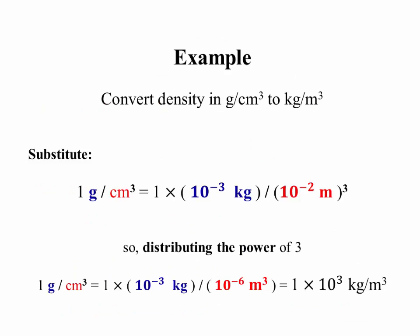Another example. Converting density in grams per cubic centimeter to kilograms per cubic meter. We just substitute. A gram is 10 to the minus 3 kilograms. The centimeter is 10 to the minus 2 meters, but it's cubed. After you distribute the power of 3, you get 10 to the minus 3 divided by 10 to the minus 6, which is 10 to the third. So the gram per cubic centimeter is 1,000 kilograms per cubic meter.